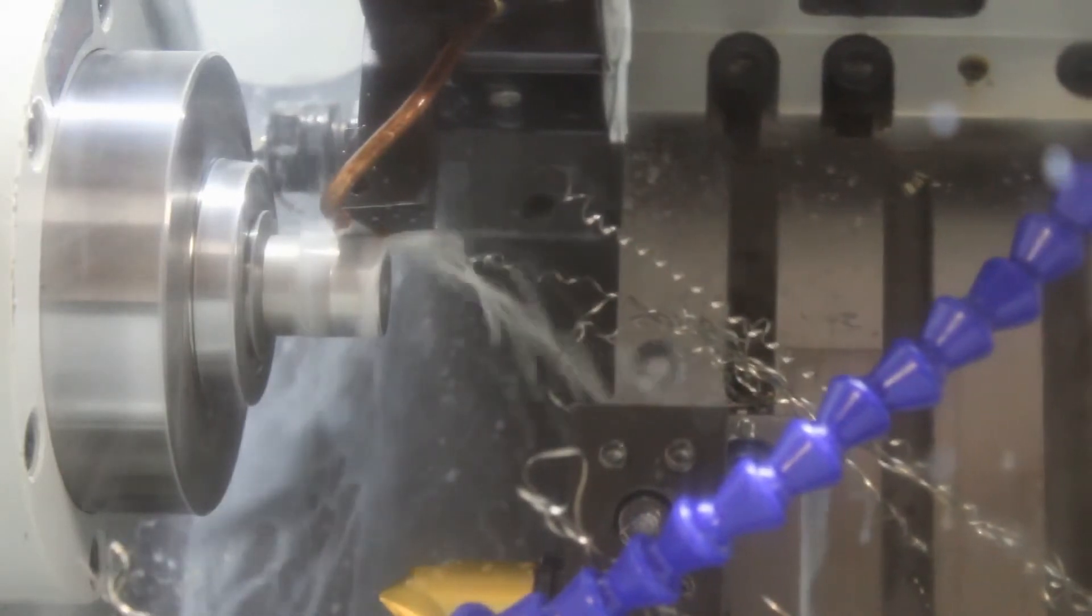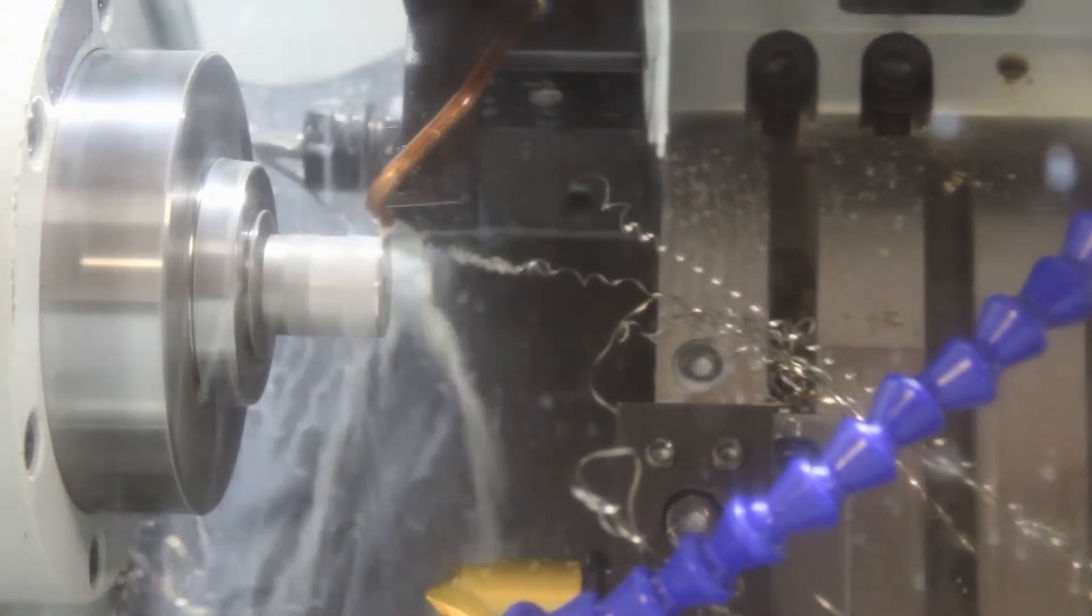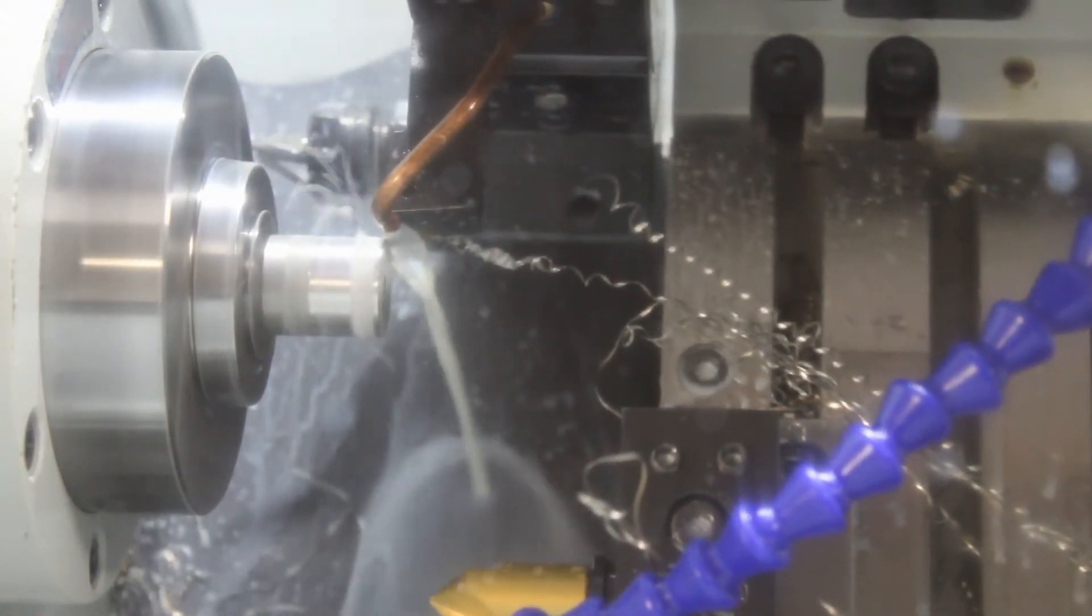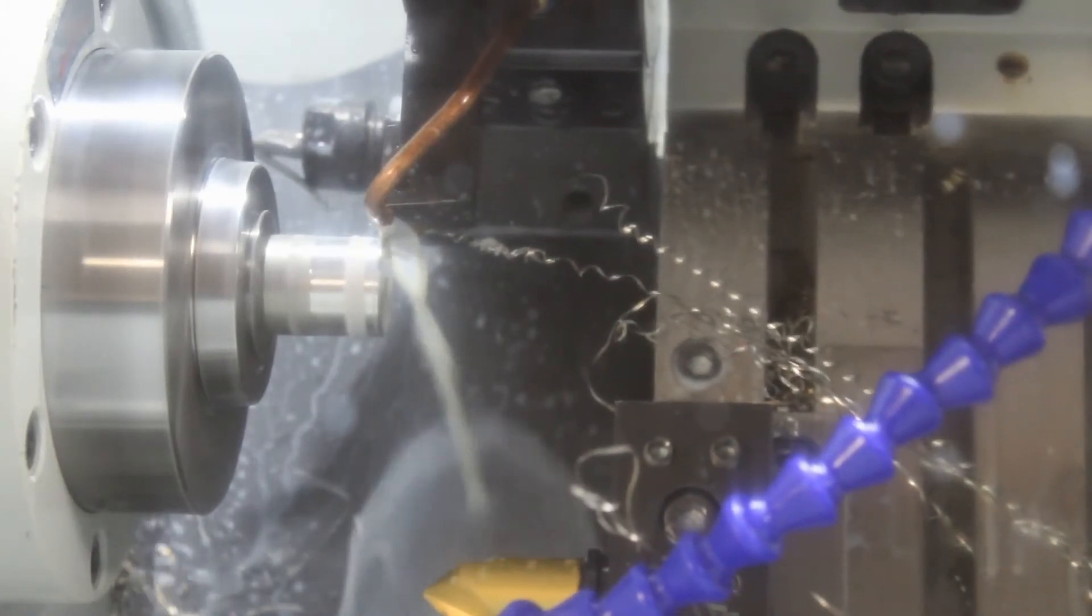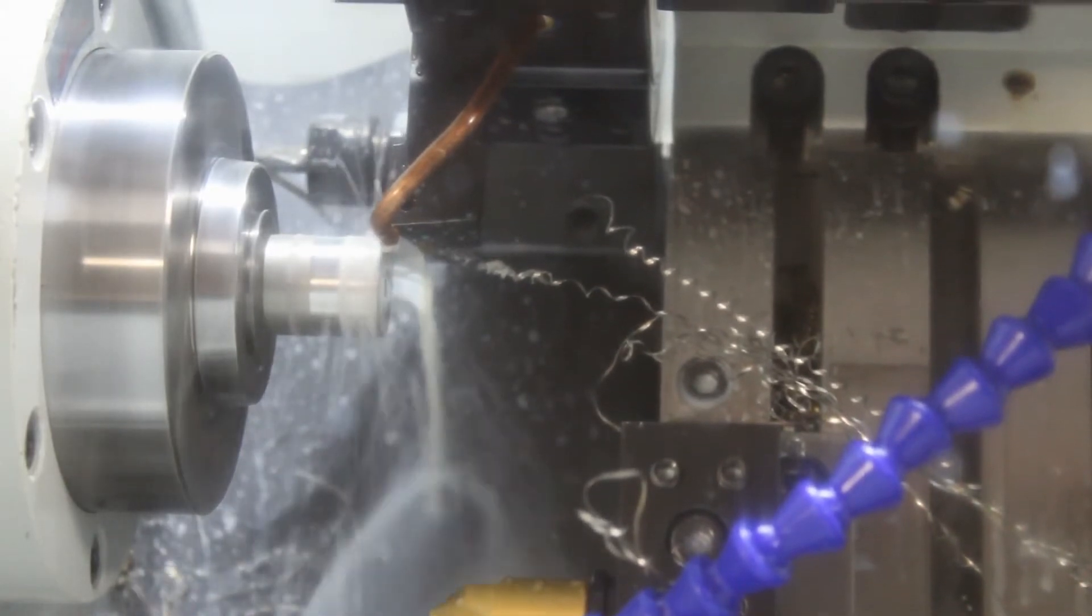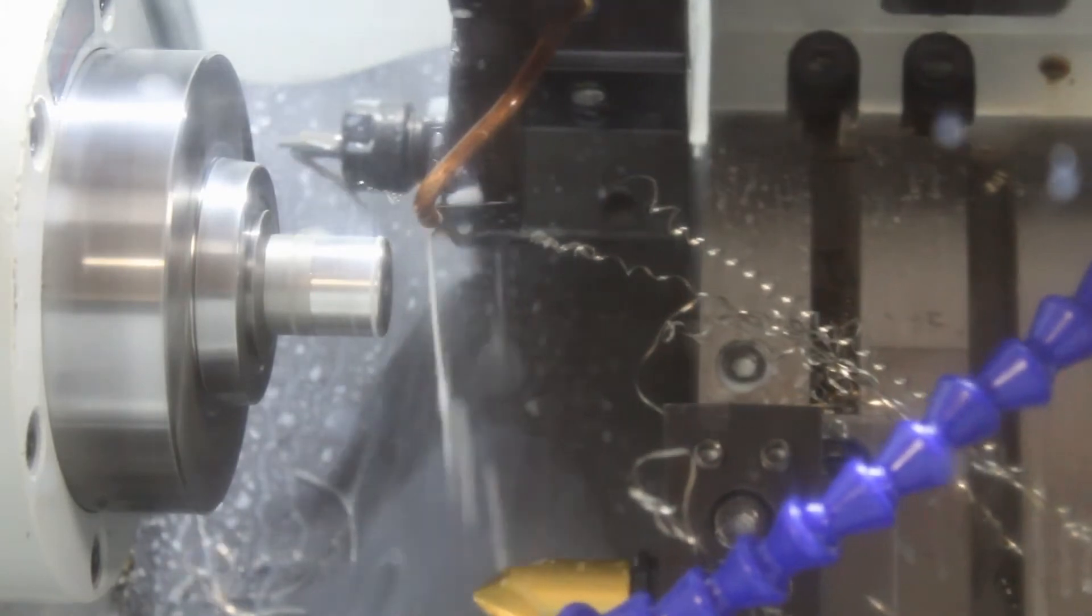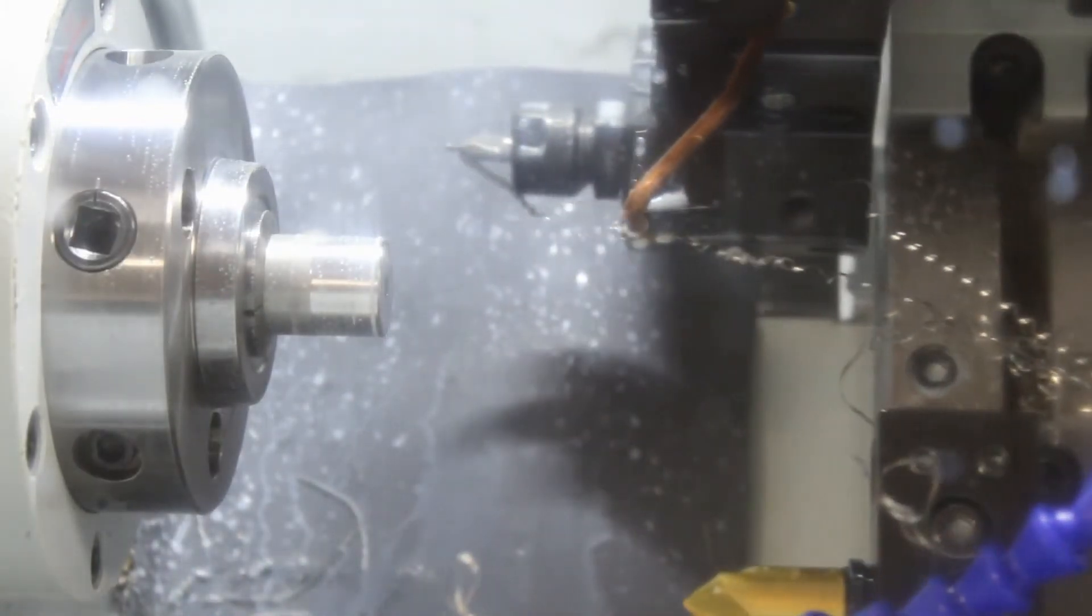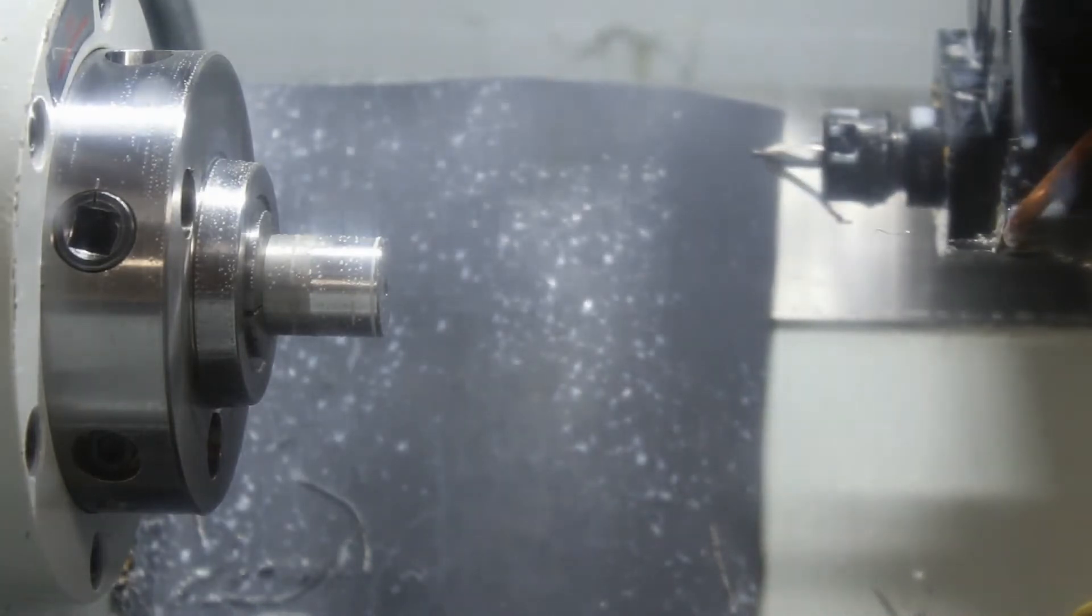Alright so we faced off, we're doing an OD turn just to make the outside shiny basically. Putting on a small chamfer here and I take another quick face pass after I put the chamfer on because it leaves a little, just like a little burr basically and the facing takes it off.